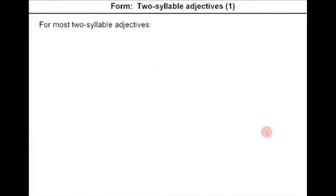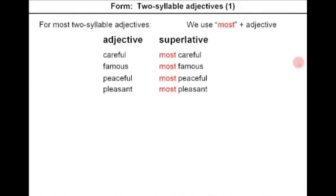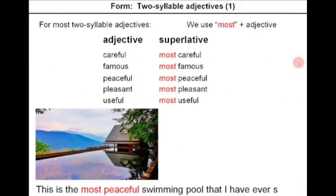For most two-syllable adjectives, we use 'most' plus adjective. For example: careful → most careful, famous → most famous, peaceful → most peaceful, pleasant → most pleasant, useful → most useful. Example: this is the most peaceful swimming pool that I have ever seen.